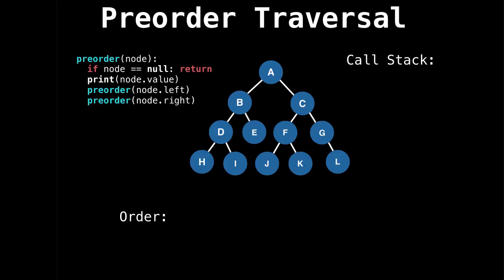For our order, what we're going to do is start at A, print A, and then we go left, go to B, then we go down to D, go down to H. And now we recurse back up, so we push node H off the call stack, go to D, and then we go to I, and then we explore I.